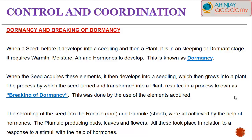This was due to the presence of elements that helped it, not to mention the hormones also. The sprouting of the seed — which involves the radicle and root, and the plumule which is the shoot — were all brought about by these hormones, which are of different types.